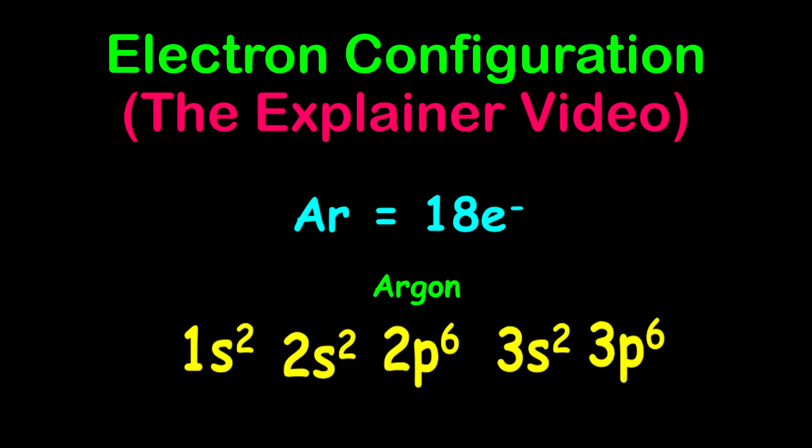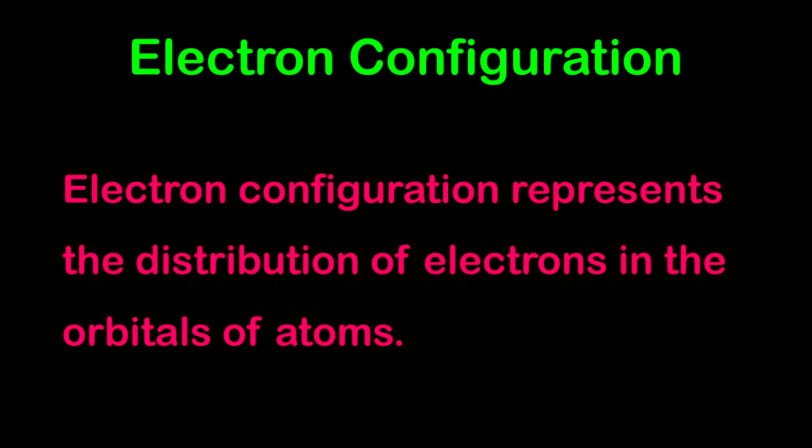Now the first thing, just to remind you what electron configuration is: an electron configuration represents the distribution of electrons in the orbitals of atoms. To understand how electrons are distributed, the first thing you have to remember is how to write these electron configurations.